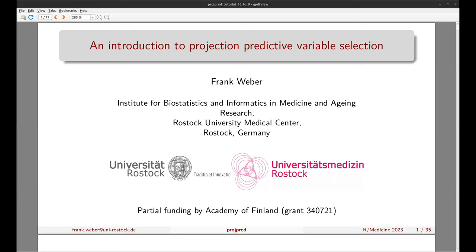PPVS is designed for Bayesian regression models. It's implemented in the R package projpred, and apart from the variable selection itself, it also allows for at least approximately valid post-selection inference. The 'approximately' caveat is because it is not validated for the selection of a submodel size, but typically the overfitting induced by the size selection is small.